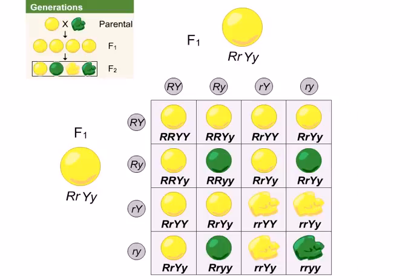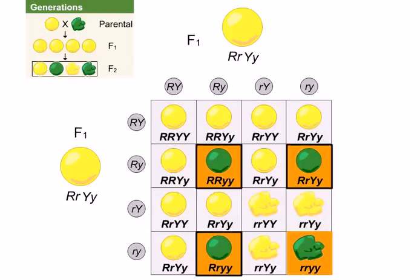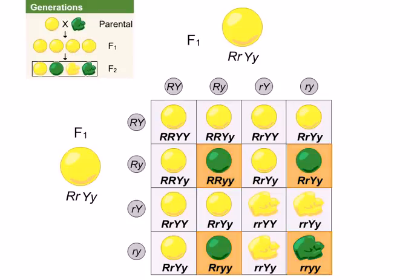Although our cross involved a difference in two traits, we can examine each trait individually to see the typical 3-to-1 ratios of single-trait crosses. There are 12 round peas and 4 wrinkled peas — a ratio of 3 round for every 1 wrinkled. Regardless of the color phenotype, the texture ratios will always be 3 to 1. Similarly, regardless of the texture genotype, the color ratios will always be 3 to 1. These results are typical for traits that assort independently.